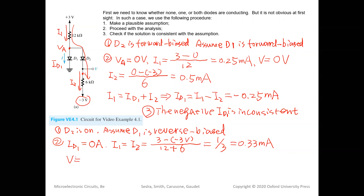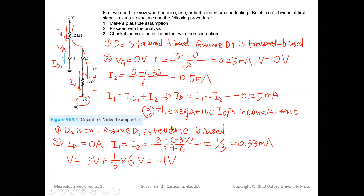The voltage V at the bottom node equals −3 V plus the voltage drop across the 6 kΩ resistor: V = −3 + (1/3 mA × 6 kΩ) = −3 + 2 = −1 V. A student asks: that V is the node between the two resistors. Since D2 is a short circuit, VA = V = −1 V.